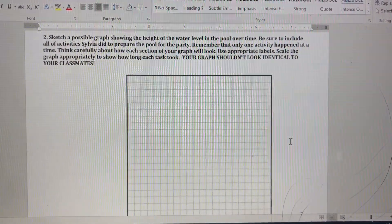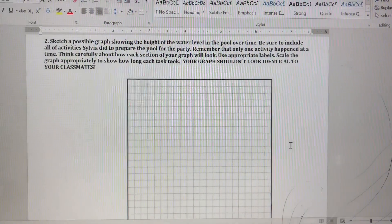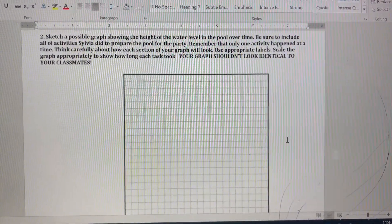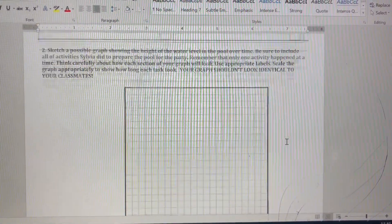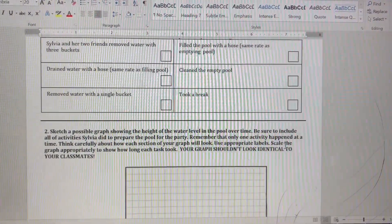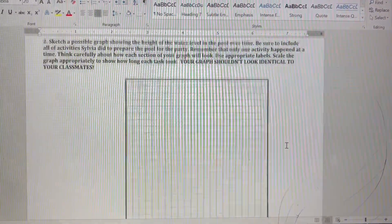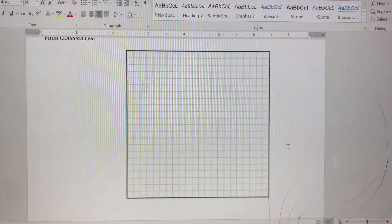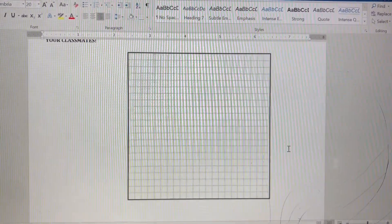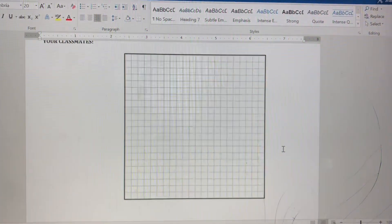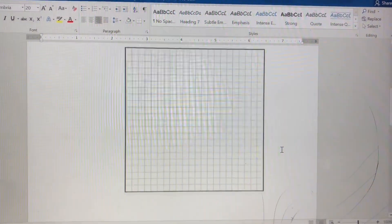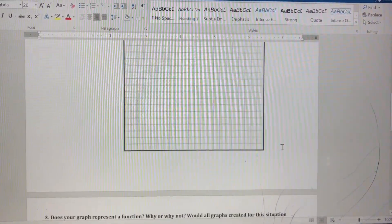You need to draw a graph of how that water level is changing over time. Since there's six activities, there should be like six different pieces to that graph, right? Sometimes the water level is increasing, sometimes decreasing, sometimes it would be staying the same depending on what activity you're on. Go ahead and make your graph there.